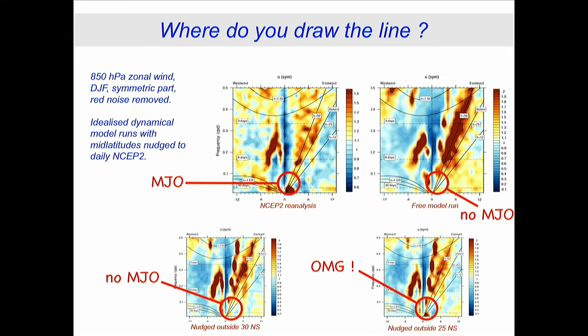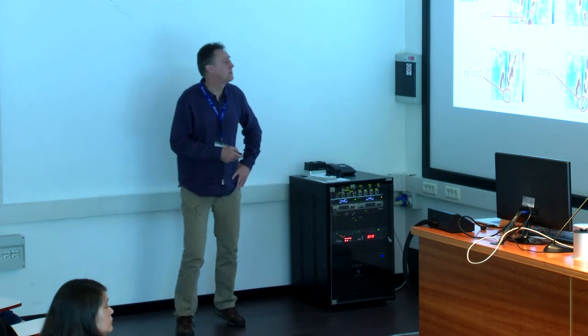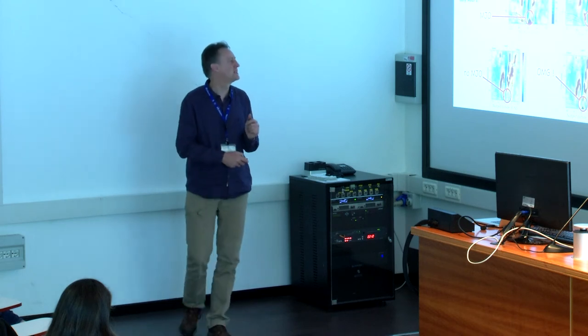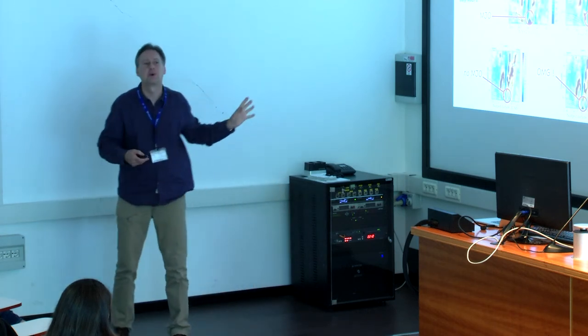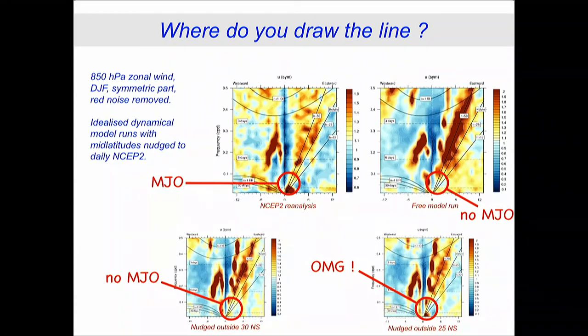During discussion, a question is raised about whether the signal seen when nudging near 25°N could be extratropical rather than tropical in origin. The speaker agrees it's ambiguous — it could be observed extratropical influence — and acknowledges the difficulty: where do you draw the line? The Adamis et al. approach, which works in terms of vorticity and divergence, is cited as a cleaner way of tackling this issue, since the simple model solves equations for vorticity and divergence.